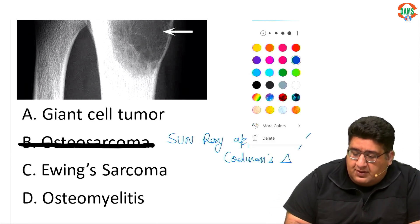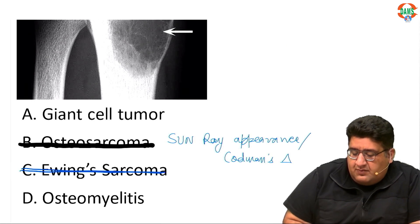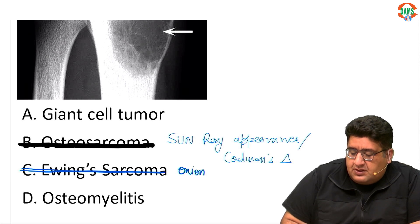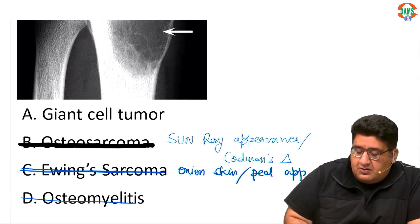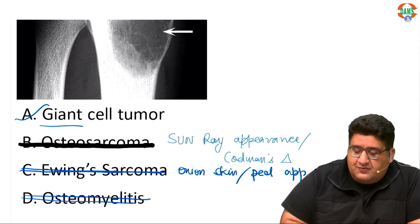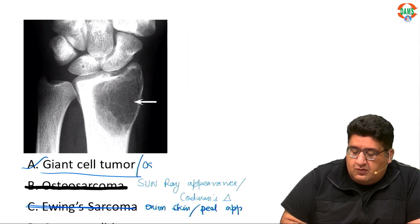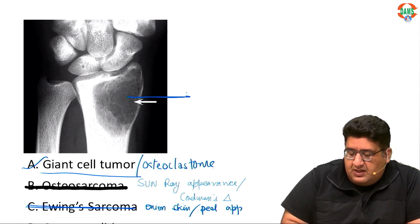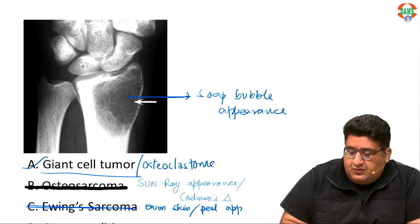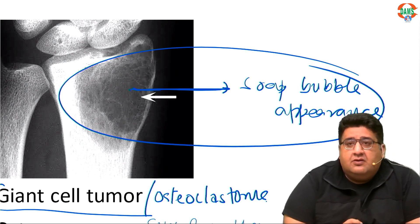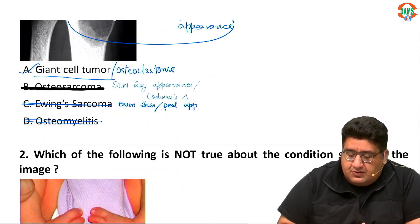I would not even call it Ewing's sarcoma, because Ewing's sarcoma will show you onion skin appearance — onion peel appearance. I don't think you can call it osteomyelitis because that would give a different picture. The answer is very clear cut: Giant Cell Tumor, also called osteoclastoma. What you have seen here is a very classical soap bubble appearance.